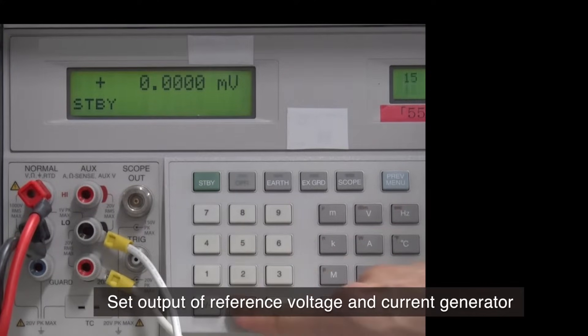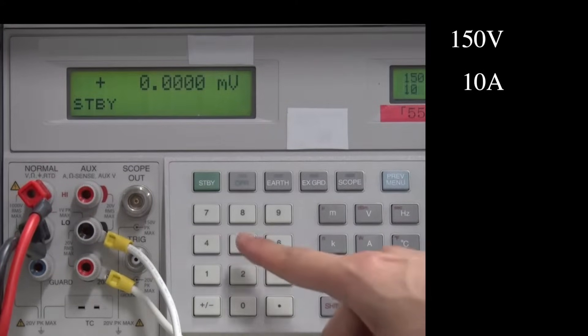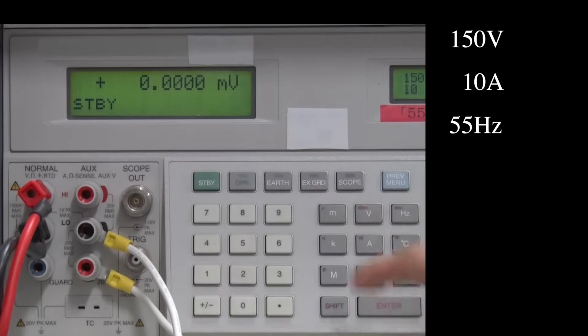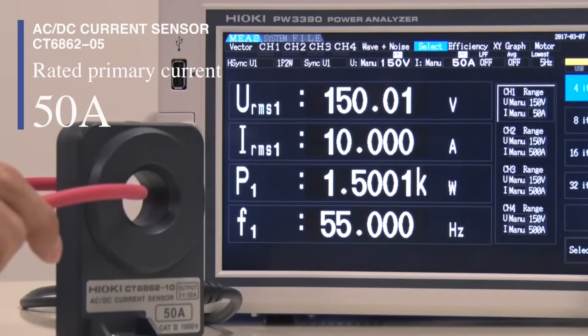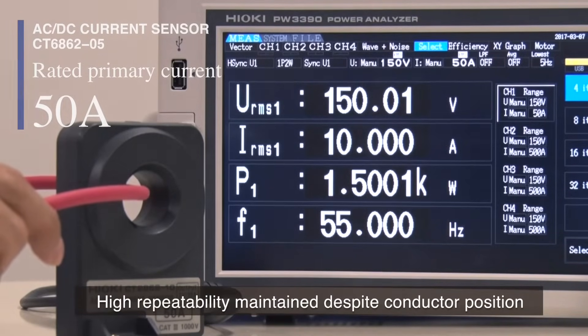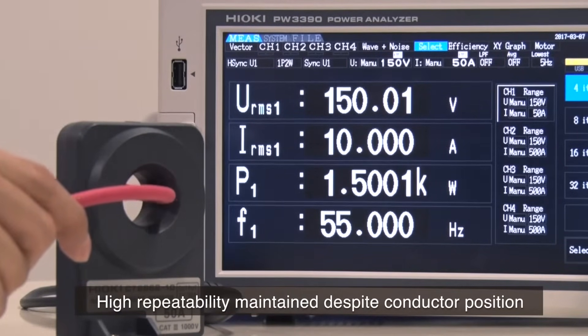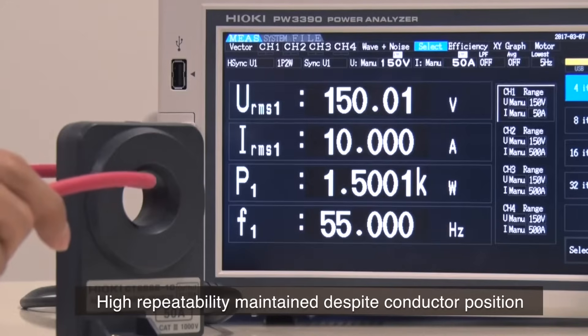First, set the reference voltage and current generators output. As you can see, high repeatability is maintained even when you move the conductor's position within the sensor opening.